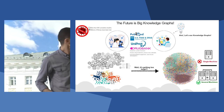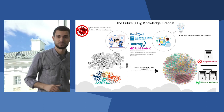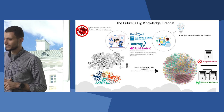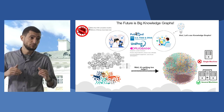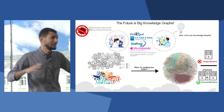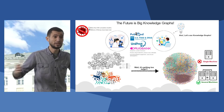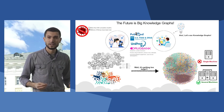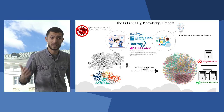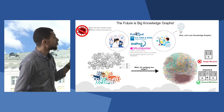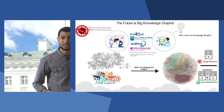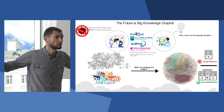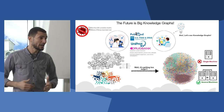Knowledge graphs are great, aren't they? But they can get very big, very easily, because we integrate a lot of datasets into one single source. Studies showed that one single machine couldn't handle these large volumes of knowledge graphs.